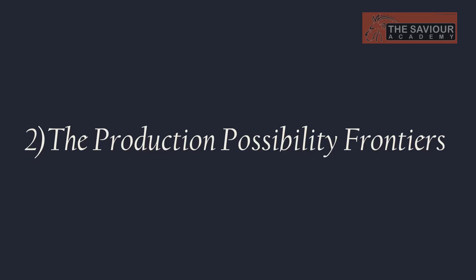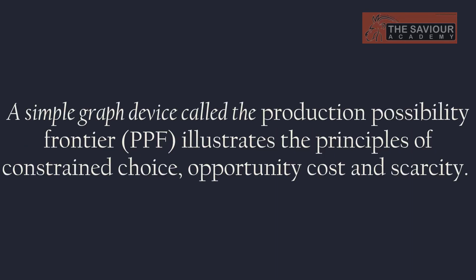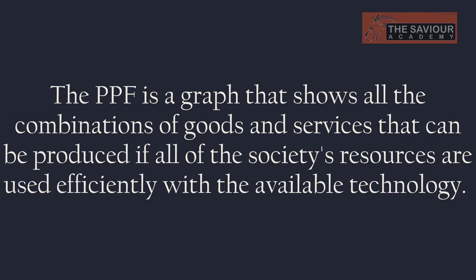The second and most important approach to the problem of scarcity and choice is the production possibility frontier (PPF), a solution to the economic problem. A simple graph, the PPF illustrates the principles of constrained choice, opportunity cost, and scarcity. The PPF is a graph that shows all combinations of goods and services that can be produced if all of society's resources are efficiently used with the available technology.